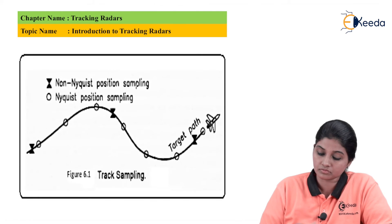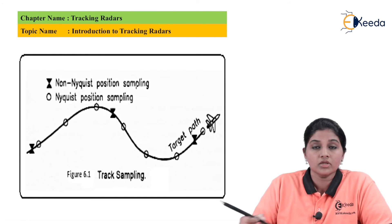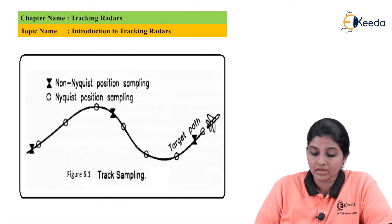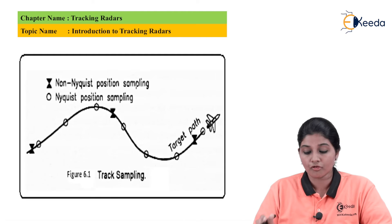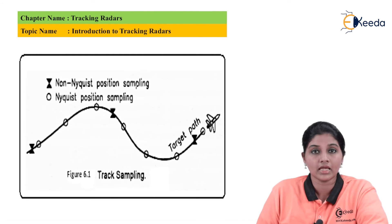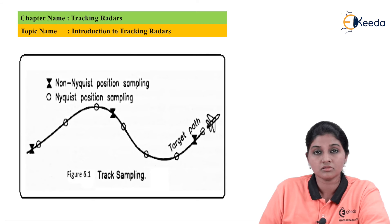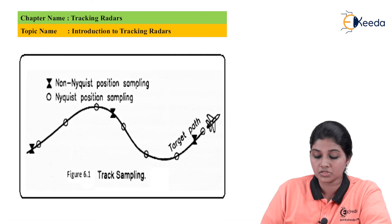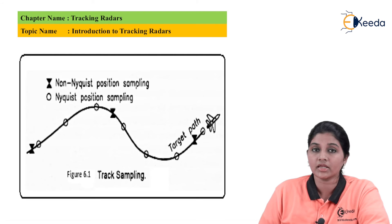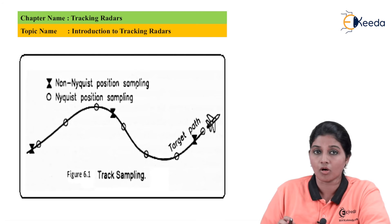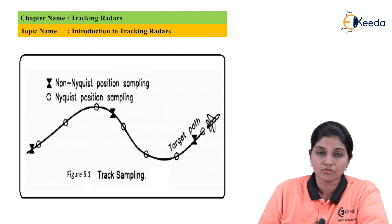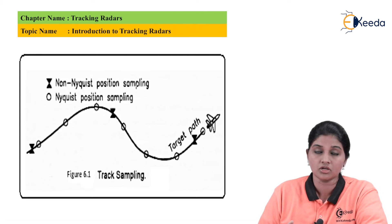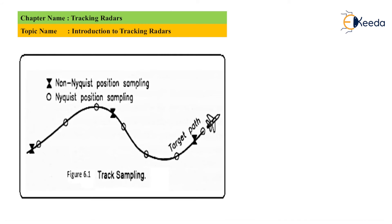In order to track the target, it is very important that the target must be tracked at the Nyquist position sampling. From the figure, the circle represents the Nyquist position sampling and the other term represents non-Nyquist position sampling. If we sample the signal at the Nyquist rate, we can have continuous tracking of the object. If we have non-Nyquist position sampling, we do not have continuous tracking of the target.